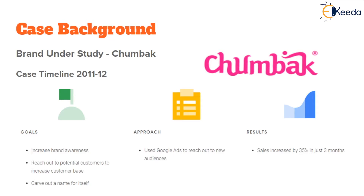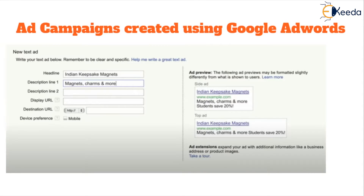The result by the end of the campaign was sales increased by 35 percent in just three months. They continued designing more campaigns on search engines and social media. Even with a meagre budget they achieved great success in increased brand awareness. They began by creating ad campaigns using Google AdWords keywords, targeted at customers who were looking for something else. Since customers were not yet aware of Chumbak, if they were searching for something like an Indian keepsake magnet, that keyword would be used to drive them to land on Chumbak's website.